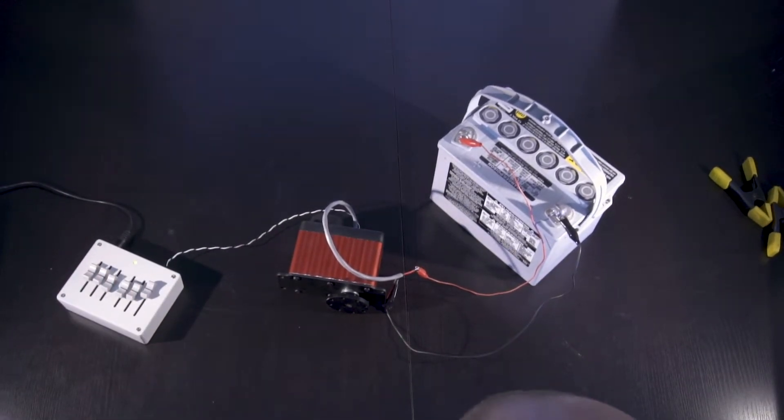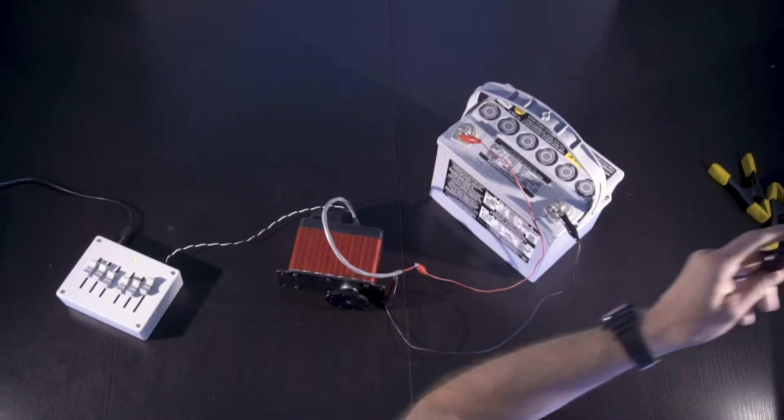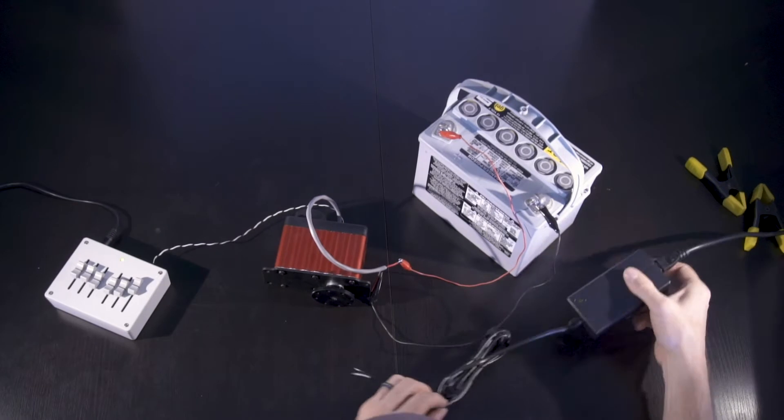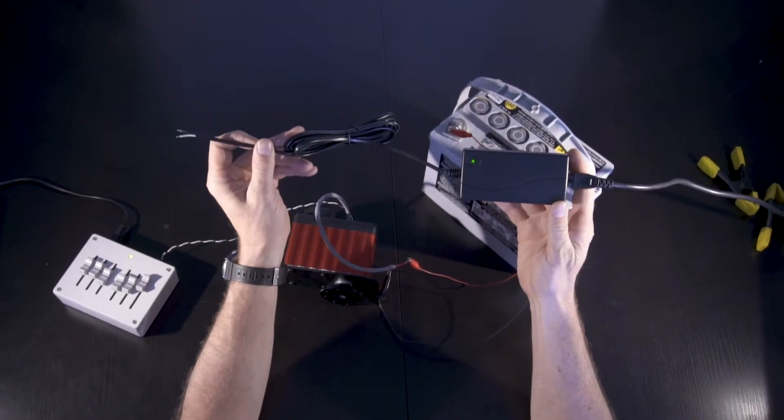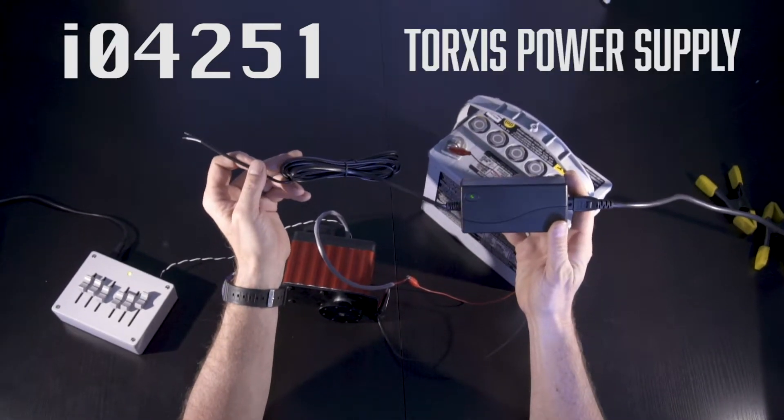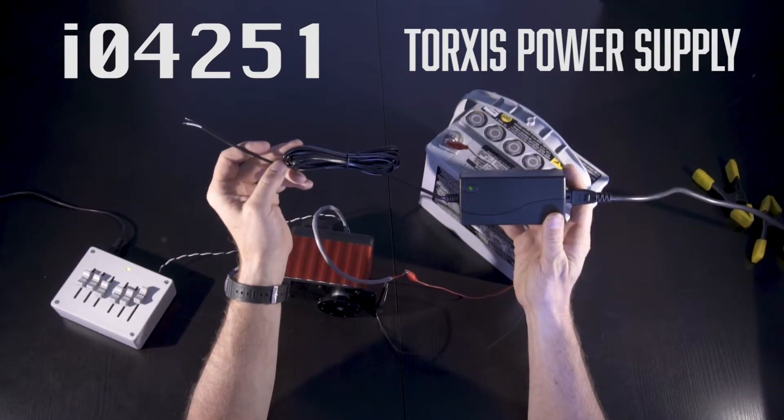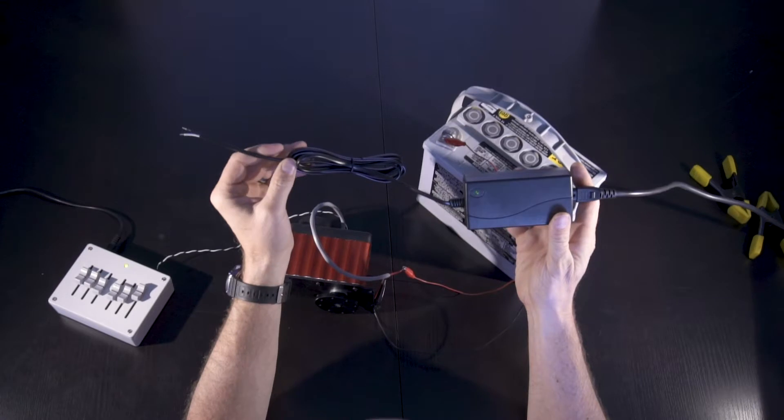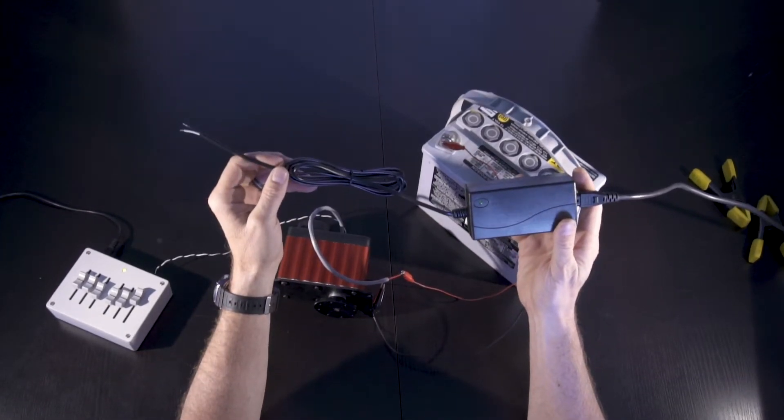And so now let's use something different to power this. Let's say you're doing something with automation and you need a small power supply. So this is our product I04251. It's what we call the Torxys power supply. And it looks like a common laptop power supply, but it is very different. Most supplies, when you hook them to a large motor like this, they fault.